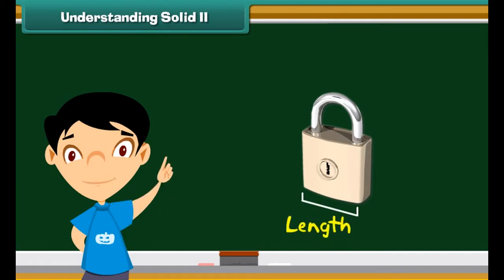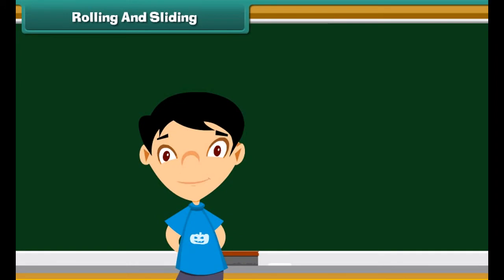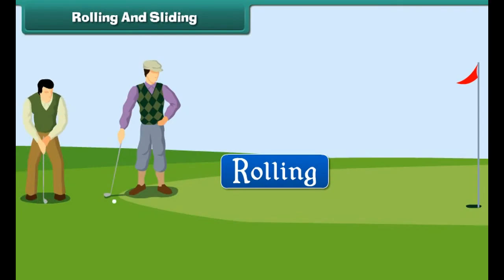Now see this lock. Is this a solid? You are correct. This lock is a solid. It has a fixed shape. It has length, width, and height. And can we press it? No, we cannot press it. It is hard.